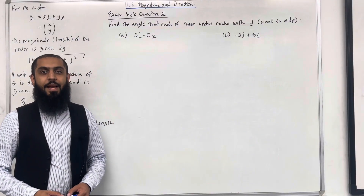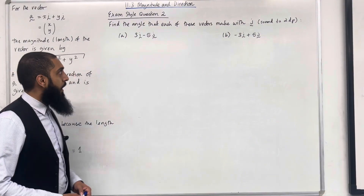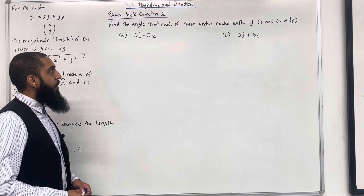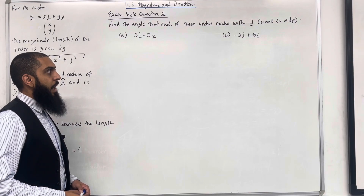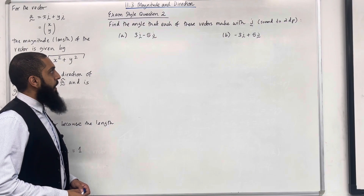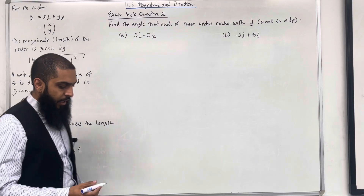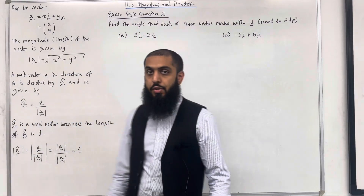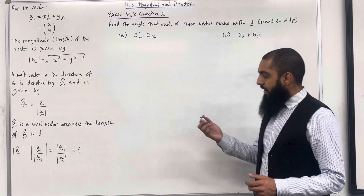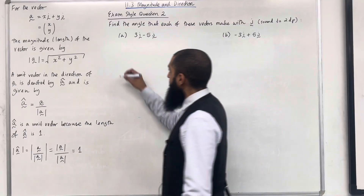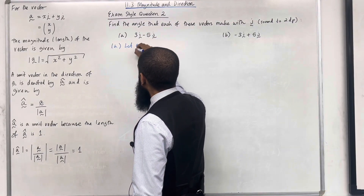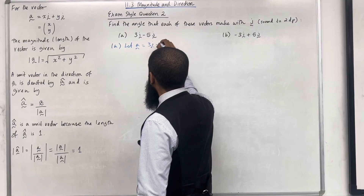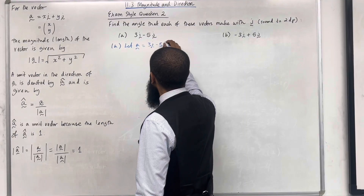Moving on to exam style question 2: find the angle that each of these vectors makes with the unit vector j, rounded to two decimal places. In part A, the vector is 3i − 5j. I'm going to start by letting A be the vector 3i − 5j.